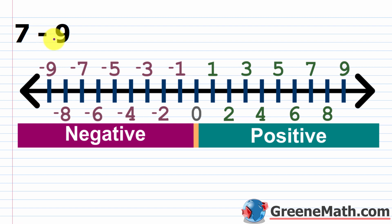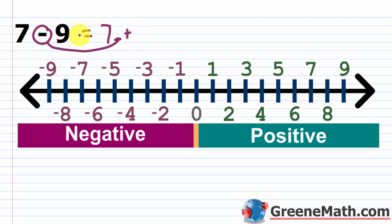So here we have 7 minus 9. Before we do anything, let's think about this logically. If I have $7 in my account, I can only spend $7 before I go negative. If I'm spending $9, I'm spending two more dollars than I have, so I should expect a balance of negative 2. Using the procedure: keep the first number unchanged, so just write a 7. Then change the subtraction into addition, and change the number being subtracted — in this case 9 — into its opposite. So that's the subtrahend.